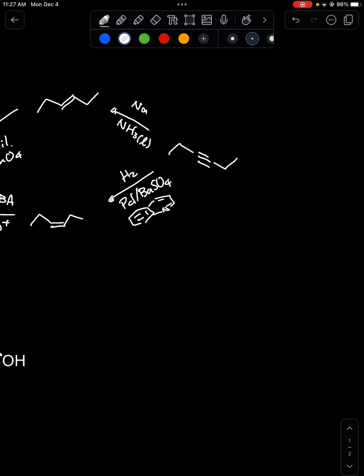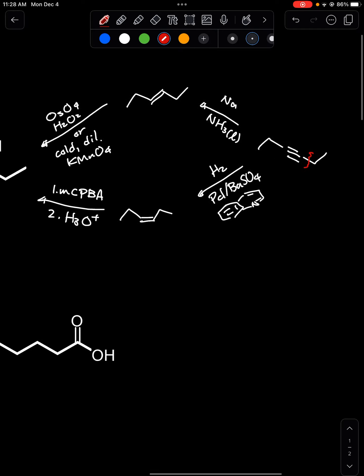To make this internal alkyne there's a couple of ways to do it. You could do double elimination from dihalide or you could add some carbons like right there at that carbon bond. In retrosynthetic analysis jargon sometimes we say we dissect the molecule at that bond because we know that we have to make that bond.